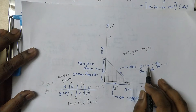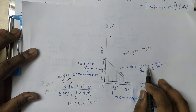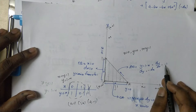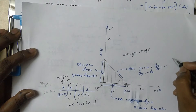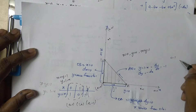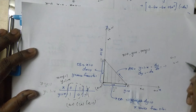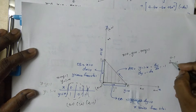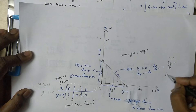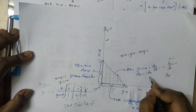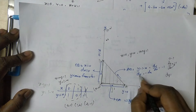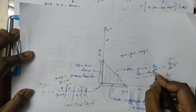Y is equal to 1 minus x. Differentiating: 1 differentiates to 0, x differentiates to 1. So dy by dx is minus 1. Therefore dy equals minus dx.